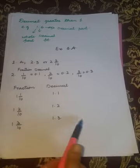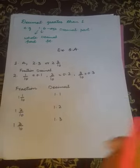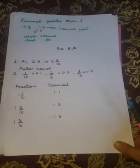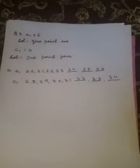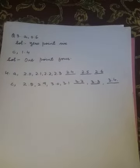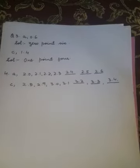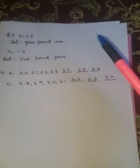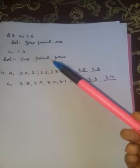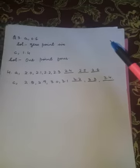Then Question Number 3, you have to write these in words. Like part A is 0.6, so we write this in words as zero point six. Part B is one point four, one point four.